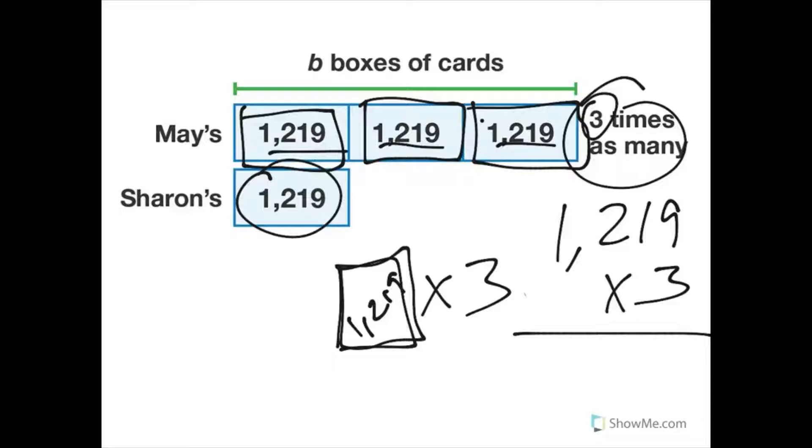I just did these doodles of this box and put 1,219 in it because that's how many cards are in it. And May's has three times as many. So what do we need to do? We need to multiply 1,219 times 3. And if we had an equation, we do 1,219 times 3 equals C, equals the number of cards. And remember, that C is a variable. It's just a letter that represents the number that it's going to be when we multiply 1,219 times 3.